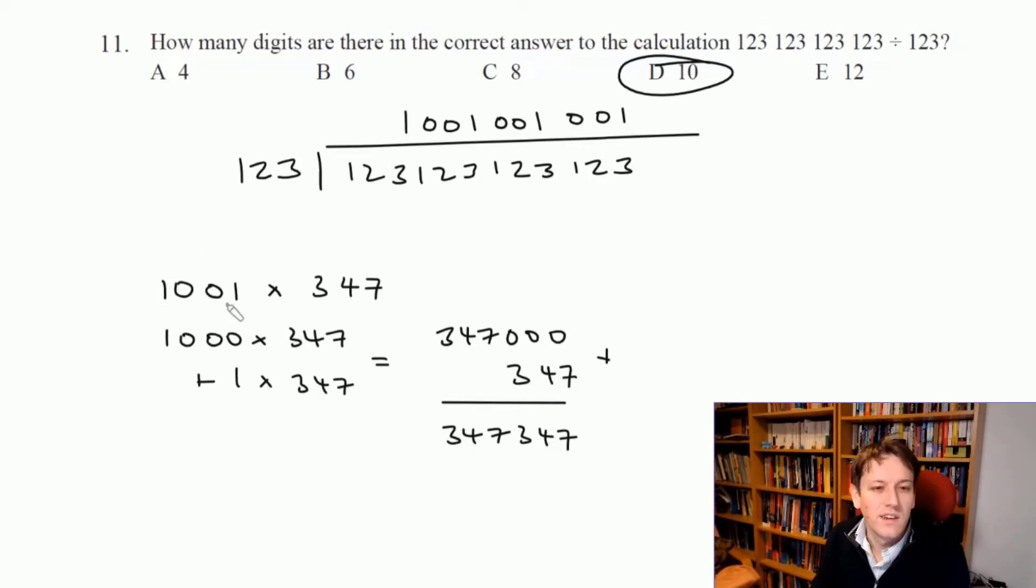Where you get a product that's got repeating patterns in like that may well have a factor that's either a thousand and one or perhaps a hundred and one or ten thousand and one, depending how long the repeating pattern is.